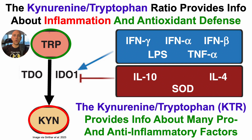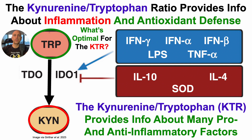So in short, the kynurenine to tryptophan ratio provides information about many pro- and anti-inflammatory factors. It's an integration of many factors, thereby highlighting its importance.